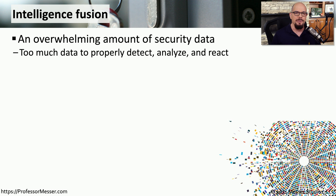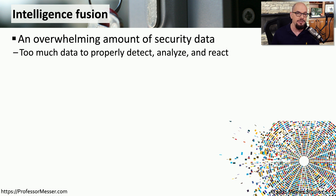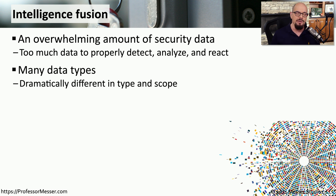One of the challenges when trying to identify these types of attacks is that there is a huge amount of data to sift through just to understand if an attack is occurring. This is a massive amount of data coming from many different locations, and it's nearly overwhelming to parse that data and make decisions on what you're seeing. These data sources are also very different — a server's information differs from an IPS, which also differs from firewall logs.